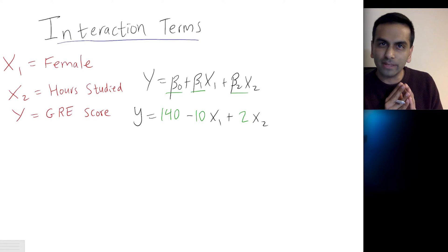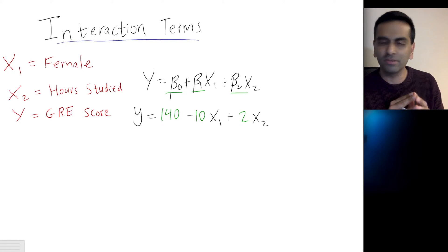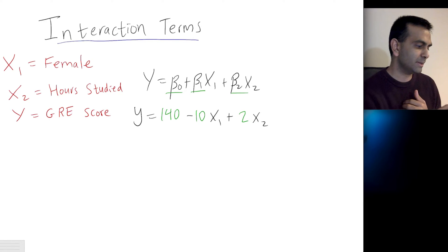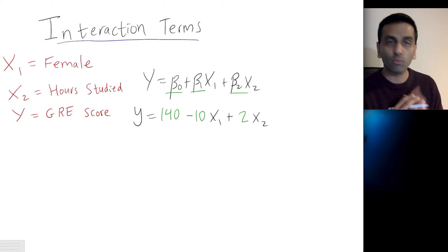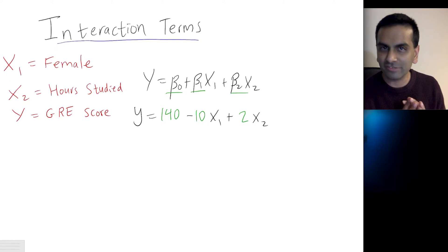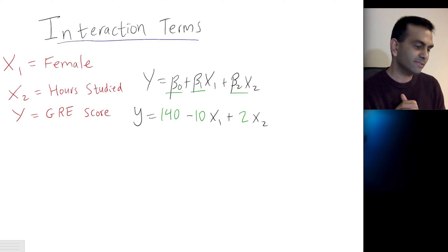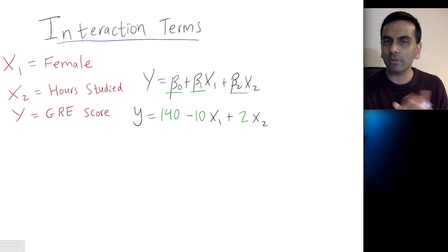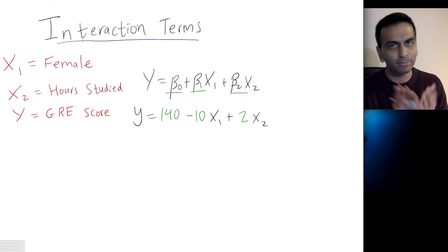Hello, everyone. In this video, we're going to talk about interaction terms. So just to set the context up here, suppose you're trying to run a regression with two variables. One is gender — let's say that's whether you're female or not, one if you're female, zero if you're not. And the second variable is the number of hours you studied the month before your GRE exam. And y is your eventual GRE score. The typical way you'd think to estimate this is y equals beta_0 plus beta_1*x1 plus beta_2*x2.